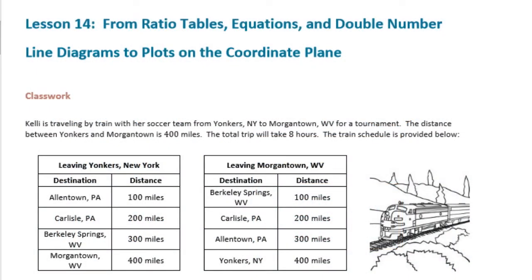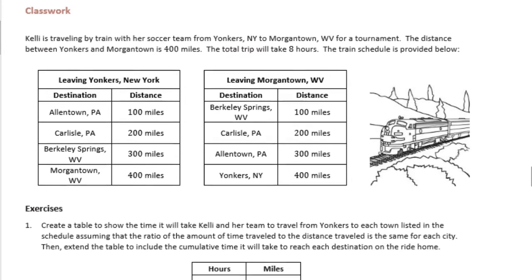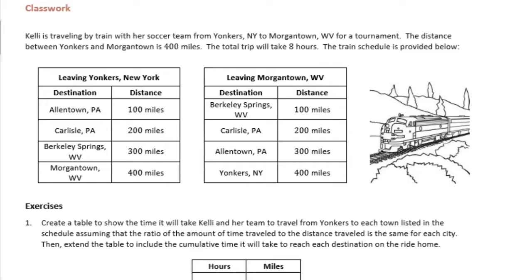Sixth grade module 1 lesson 14 classwork. Kelly is traveling by train with her soccer team from Yonkers, New York to Morgantown, West Virginia for a tournament. The distance between Yonkers and Morgantown is 400 miles. The total trip will take eight hours. The train schedule is provided below so we can see the different stops that they have, where they are, how far it is if we're leaving Yonkers.